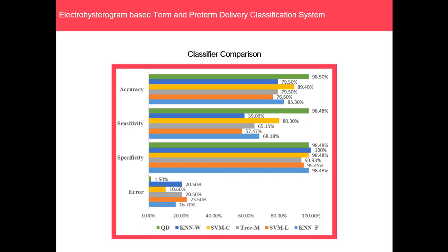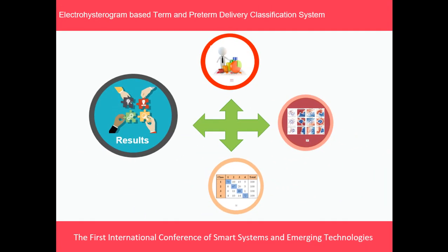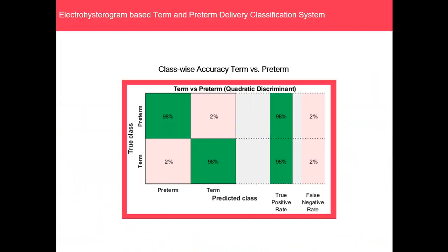A classifier comparison is also shown, presenting the accuracy, sensitivity, specificity, and error of each classifier, and it can be clearly seen that QDA gave the best results. Finally, the class-wise accuracy shows that 98% of preterm cases were detected correctly with 2% incorrect, and similarly for the term class.